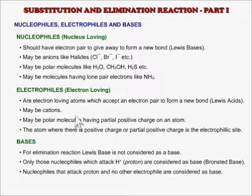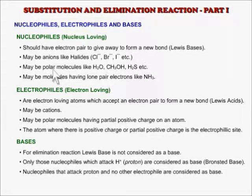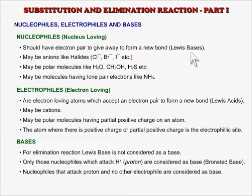Nucleophiles, Electrophiles, and Bases. Nucleophiles are species which may give away an electron pair to form a new bond. The word nucleophile means nucleus-loving, and we know that the atomic nucleus is positively charged. A nucleophile may be an anion like chloride or bromide, or it may be a polar molecule like H₂O, methyl alcohol, or H₂S, which have a partial negative charge on an atom. Nucleophiles may therefore be termed as Lewis bases.